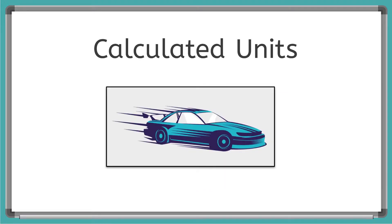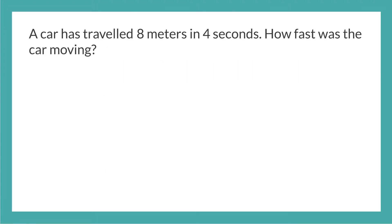Let's do an example of calculating the velocity of a car from two measurables, distance and time. From this example, we will be able to show how the units of distance and time can be calculated to give us the units of velocity. So our question is, a car has traveled 8 meters in 4 seconds. How fast was the car moving?